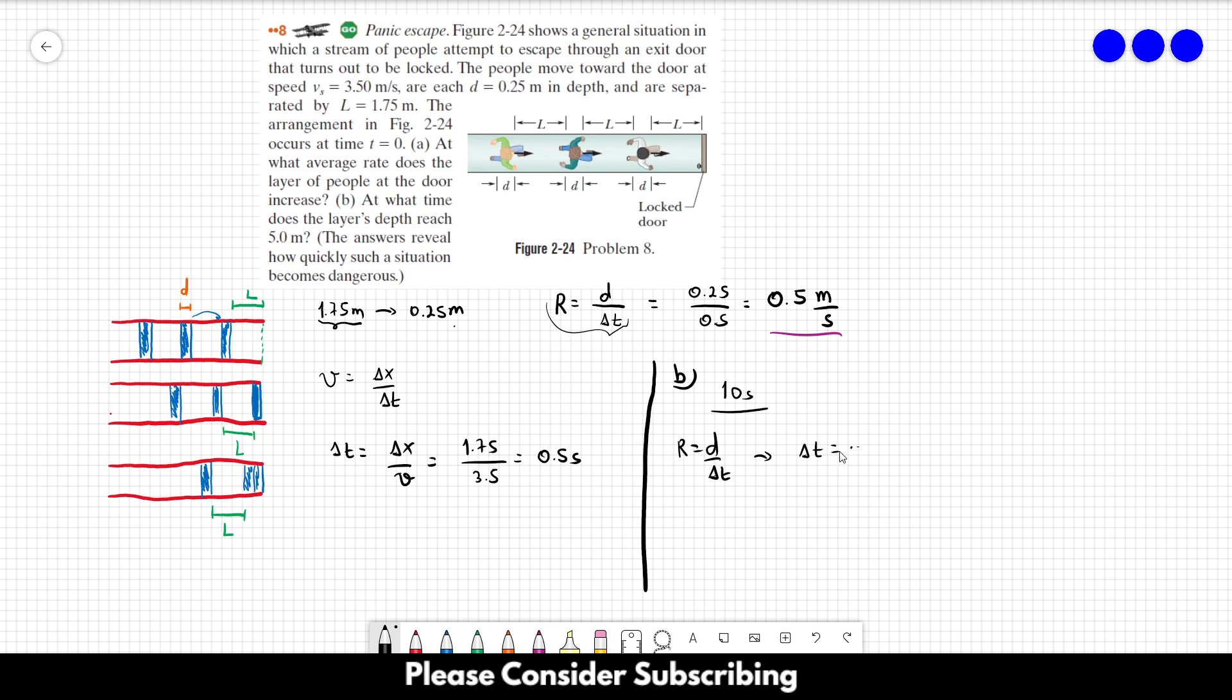Delta T equals D over R. We want a layer of 5 meters and the rate is 0.5, so this equals 10 seconds. That's how you find the answer doing some calculations. And that's it.